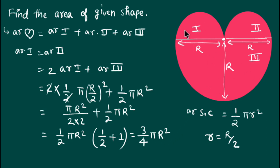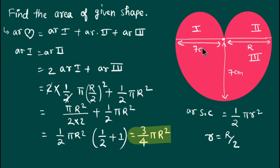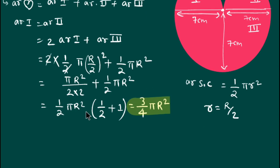So this is the formula for the area of the given shape: area equals (3/4) π R², where R is the radius of the bigger semicircle. Now suppose in the given question the value of R is 7 centimeters — that means the radius of the bigger part is 7 cm, and the diameter of each smaller one is 7 cm. Now we find the area of this shape.